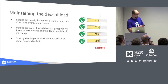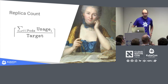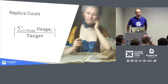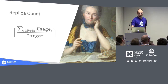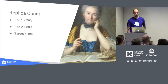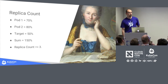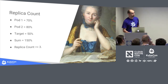All in all, we want to specify a target for the load and automatically adjust the number of replicas so that on average the load is as close to the target as possible. Here is a sample formula — it looks scary but it's not complicated: it sums the usage of pods divided by the target and rounds up. For example, if we have two pods running at 70% and 80% CPU with a target of 50%, the sum of usage is 150, divided by 50 gives 3 — these are the three replicas we want.